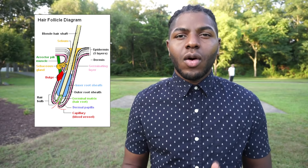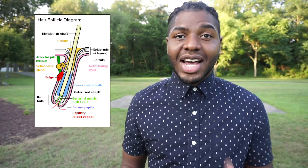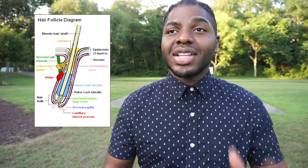This is a follicle. Humans have about 100,000 of these per square inch on their body on average, and an average scalp has around 120 square inches — so that's 12 million follicles all on the dome. Each one looks roughly similar to this.